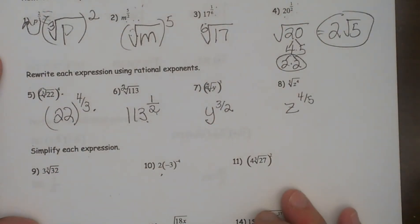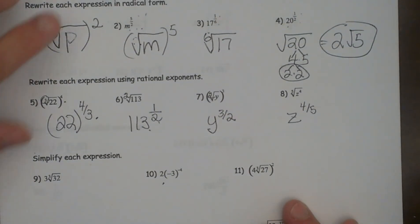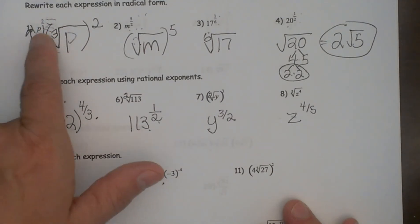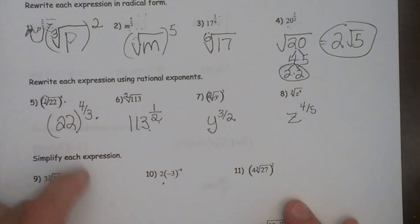There is a quick little run through on how to convert from a rational to a radical and then from radical back to a rational. Hope this video was helpful.